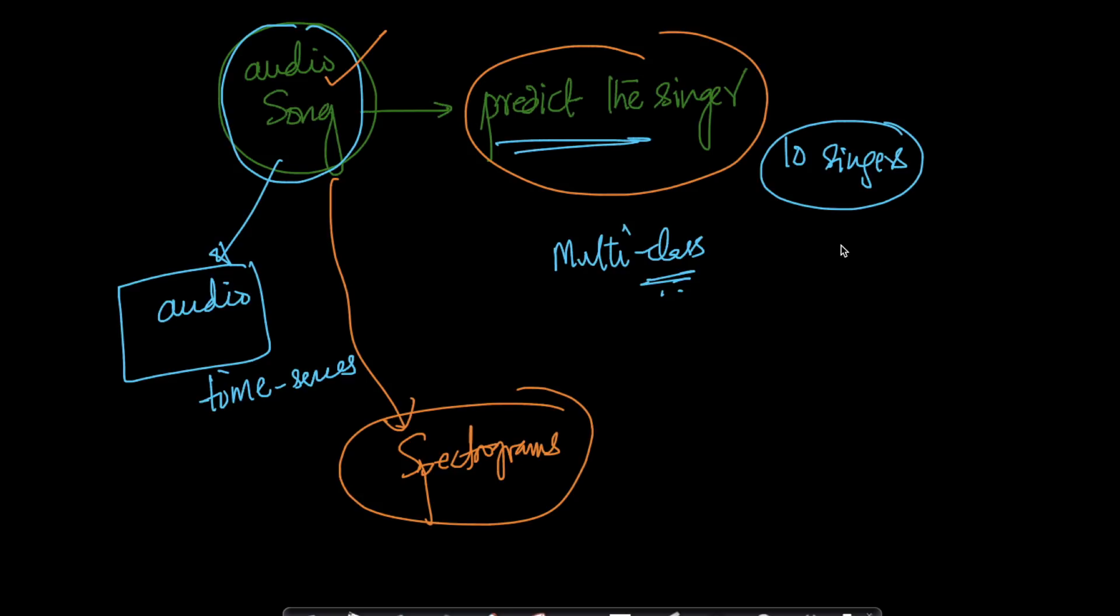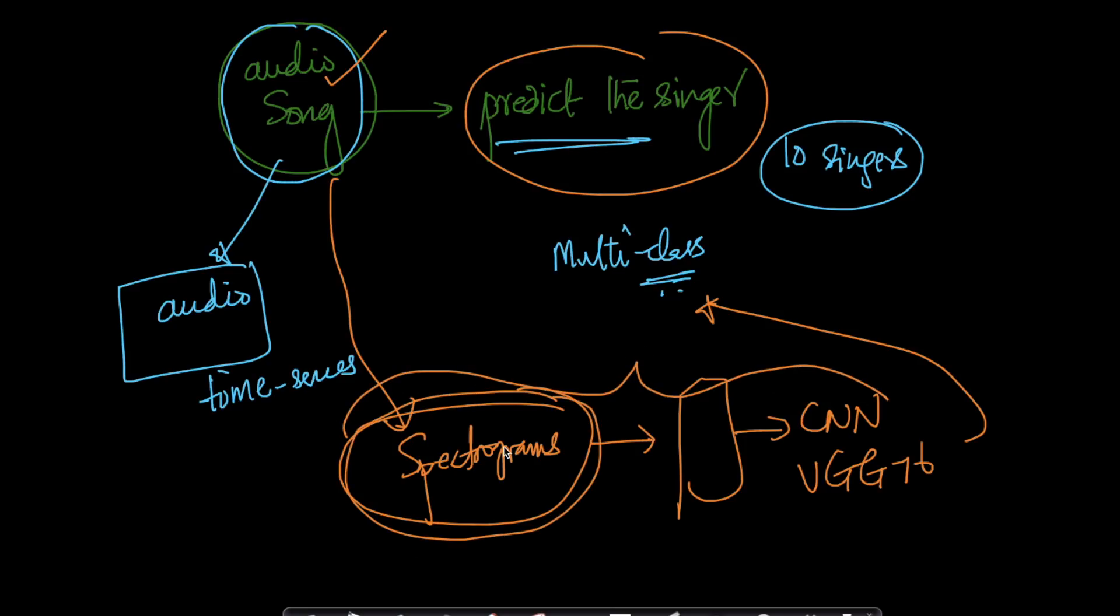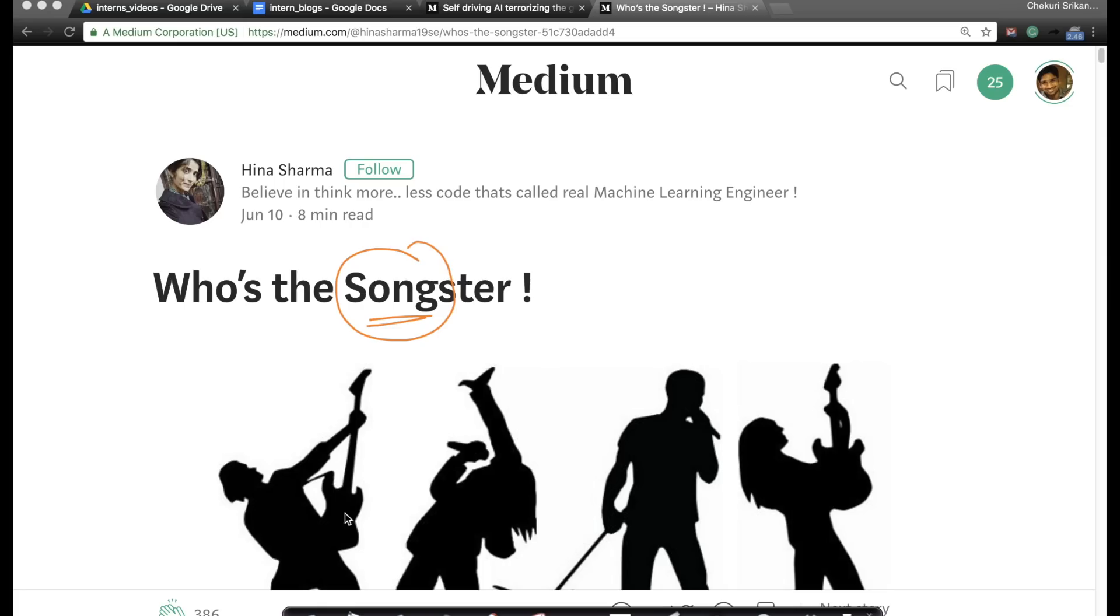We pointed her in the right directions. We said typically for audio there's something called a spectrogram which will give you an image, and on top of image you can apply CNN. If you don't have a lot of computational resources, just use VGG16 to get the features and pump them through an XGBoost model. We gave her the pointers and she ended up reading up about spectrograms, learned what they are, and solved the whole problem on her own. This is what we do for all of our students—we guide them in the right direction.